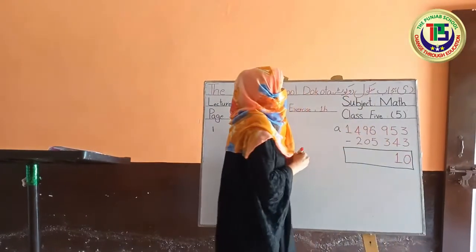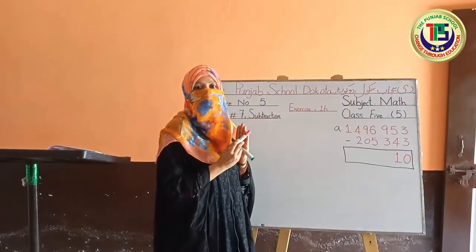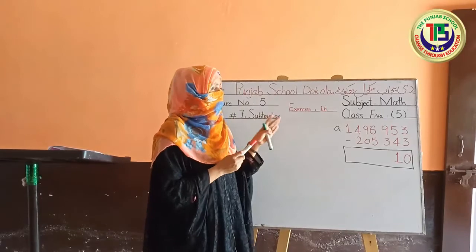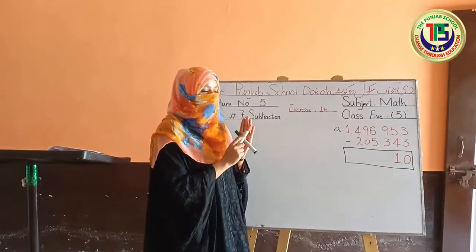9 minus 3: I will start counting from 3 onwards and end at 9. After 3: 4, 5, 6, 7, 8, 9 — so the answer is 6.